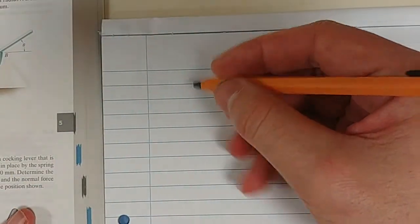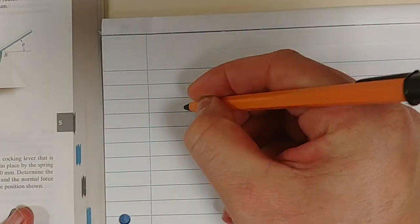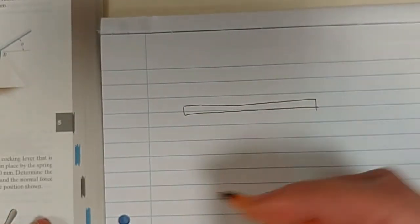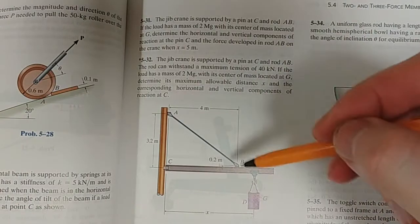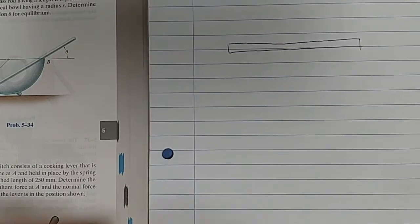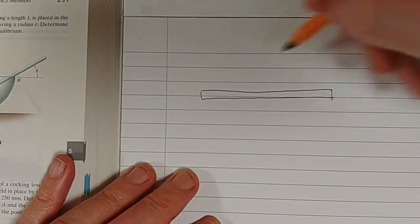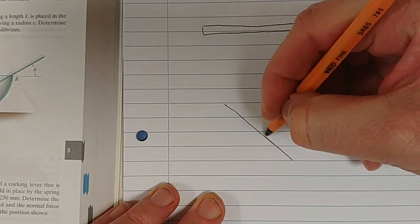So we need to draw our free body diagram. So here's the beam, there's the beam. And what do you notice about this rod? It's a two-force member.